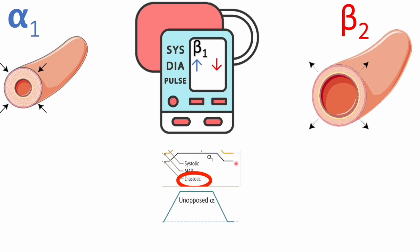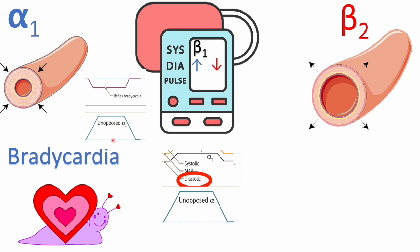Next is the heart rate or pulse. Unopposed alpha-1 stimulation, or severe vasoconstriction, leads to reflex bradycardia. The body is trying to protect itself from hypertension by decreasing the heart rate to balance out blood pressure. Therefore, whatever causes severe vasoconstriction will lead to a reflex decrease in heart rate. We've seen this in the norepinephrine curve — with unopposed alpha-1 stimulation and severe vasoconstriction, the body decreases blood pressure via reflex bradycardia. The same goes for vasodilation.